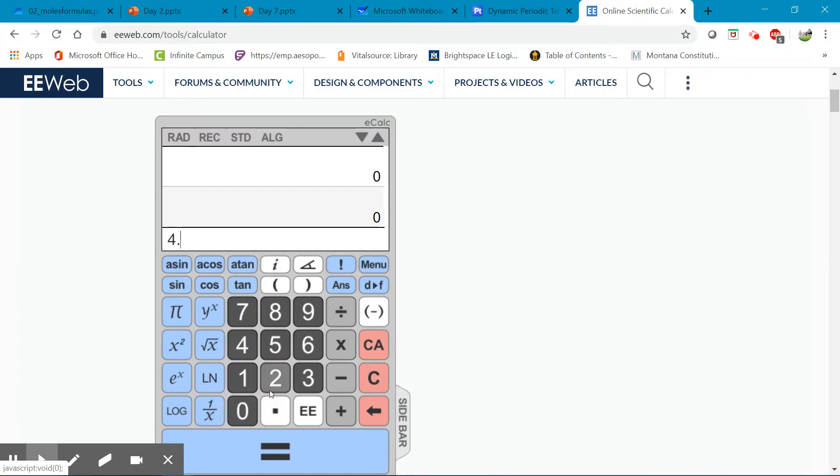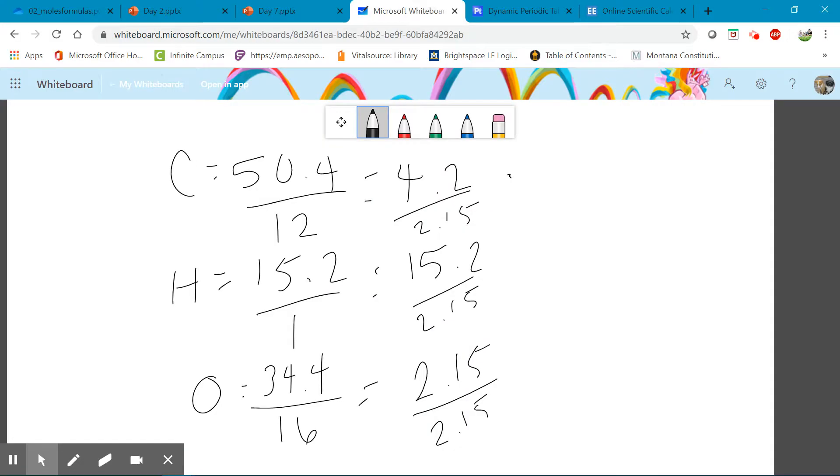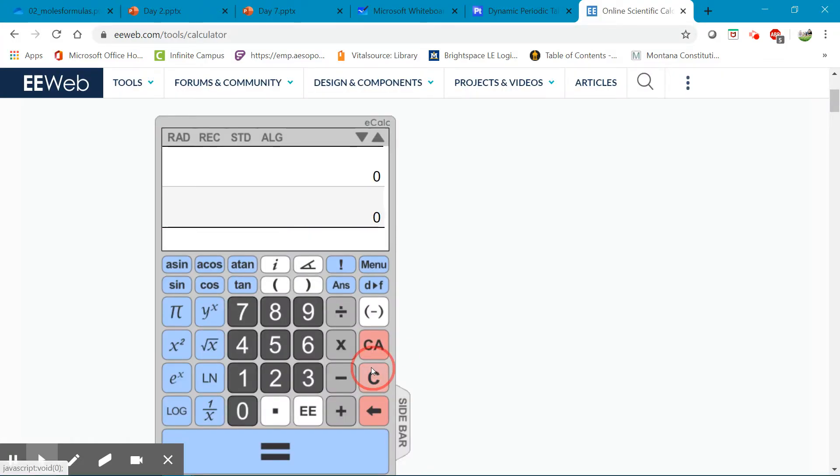So for example, 4.2 divided by 2.15 is 1.95. So that is rounded to 2. 15.2 divided by 2.15 is 7.06, so we would round that to 7.